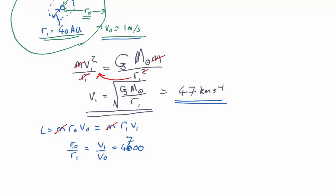So what that means is the final distance must be 4,700 times the starting one. It started off at 40 astronomical units. So the final distance is going to be 40 times 4,700 equals 188,000 astronomical units out. Pretty big.